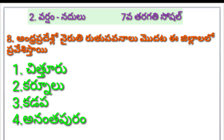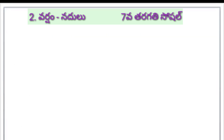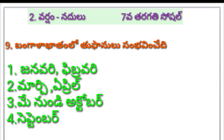The correct answers are Chitturu and Karnu — March, April, May, October, September. Very easy answer. The correct answer is Option 3: May, October.